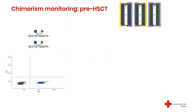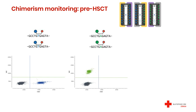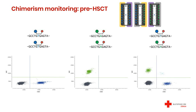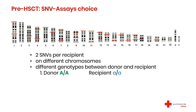Looking at real genotyping data from samples pre-transplantation when we select our markers: here would be a 2D plot obtained from a FAM-allele homozygous sample, here a 2D plot for a VIC-allele homozygous sample, and here a 2D plot for a heterozygous sample. For all 24 SNVs that we test, this is how we derive the genotype of the recipient and of the donor. In our example, we have a homozygous FAM recipient in blue and homozygous VIC donor in green.